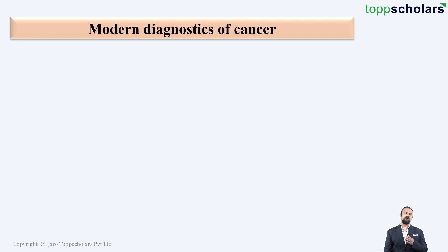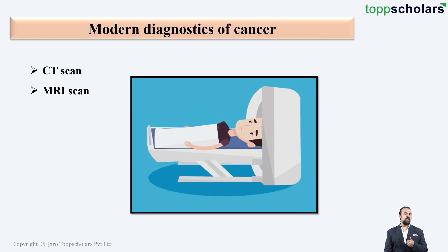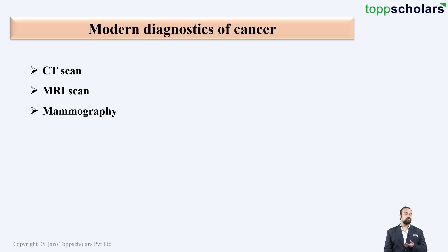Let us now take a look at the modern diagnostics of cancer — the ways for diagnosing cancer. The first is CT scan, which is an advanced version of X-rays. Next we have MRI, which stands for Magnetic Resonance Imaging, wherein a machine containing a huge magnet is used to obtain images of the body. Next is mammography, which is used to detect breast cancer. Finally, biopsy is a procedure wherein a small part of tissue is obtained from the body and the cells of that tissue are studied under the microscope to detect cancer.